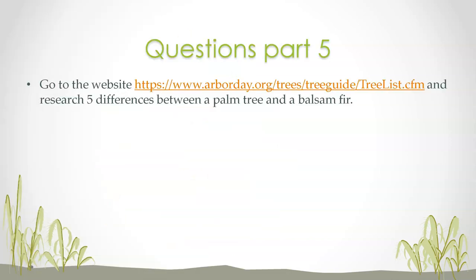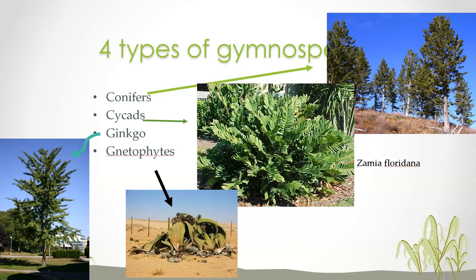Question part five: go to the website linked in the description and research five differences between a palm tree, which we see all over in Florida, and a balsam fir. There are four types of gymnosperms: here's a cycad native to Florida, here are gnetophytes (like ginkgo biloba — a rare kind of tree), and we see pine trees all over the place, especially on country roads. Conifers are all over the place — those are the types of gymnosperms.